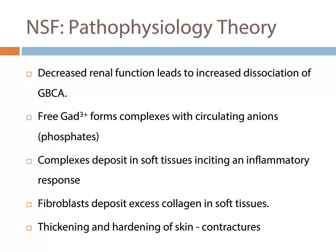The exact pathophysiology underlying nephrogenic systemic fibrosis is debated. The most prevalent theory holds that gadolinium chelates are inherently unstable and with time will dissociate into the chelate backbone and free gadolinium 3-plus ions. Once dissociated from the chelating agent, the gadolinium ion forms complexes with circulating anions — phosphates being one example. These newly formed complexes then deposit into soft tissues and incite an inflammatory response, including the recruitment of fibroblasts, which deposit excessive collagen leading to the characteristic skin thickening and contractures.